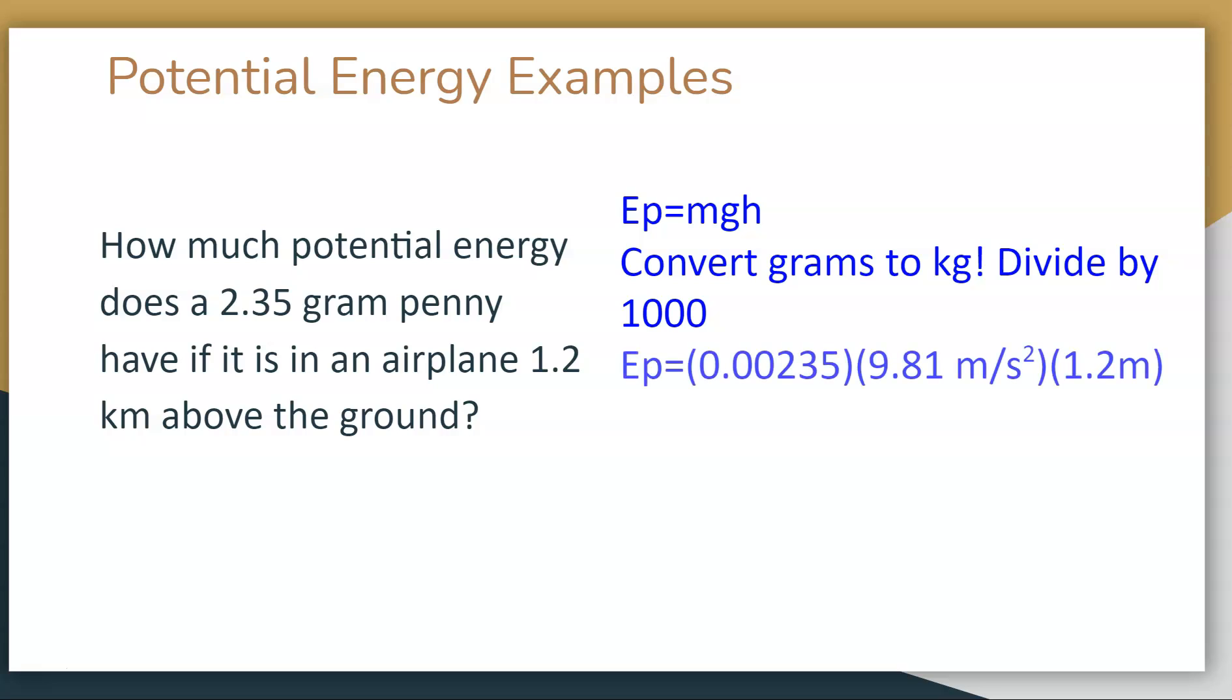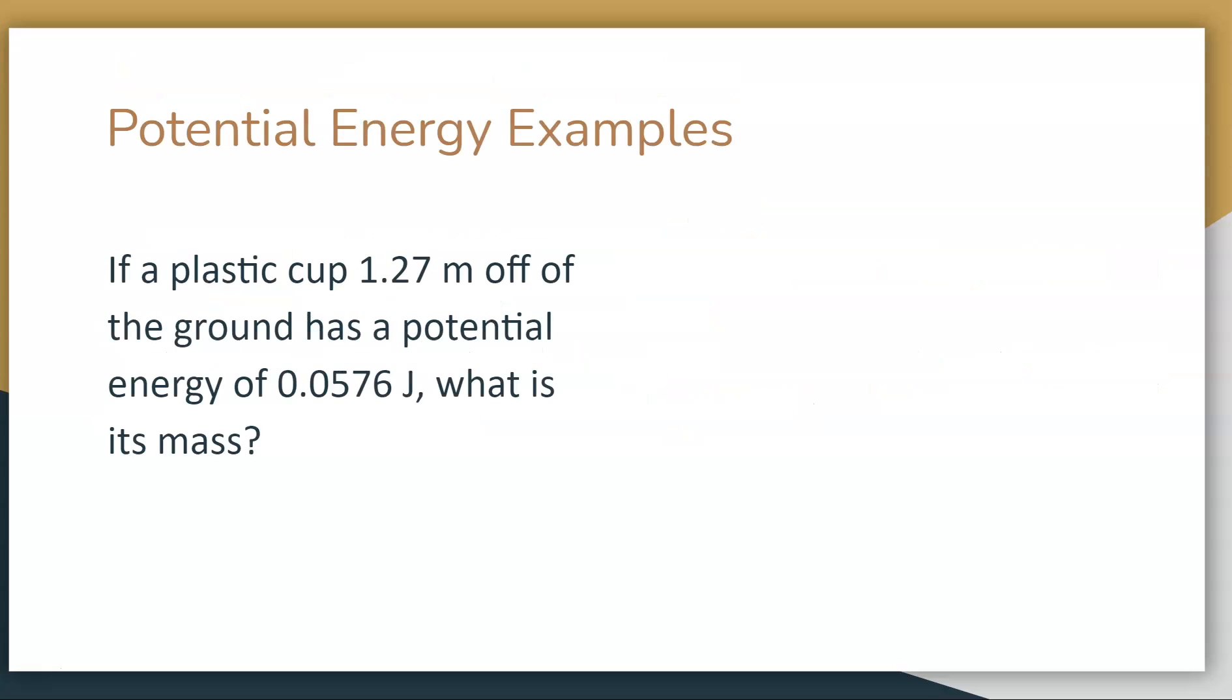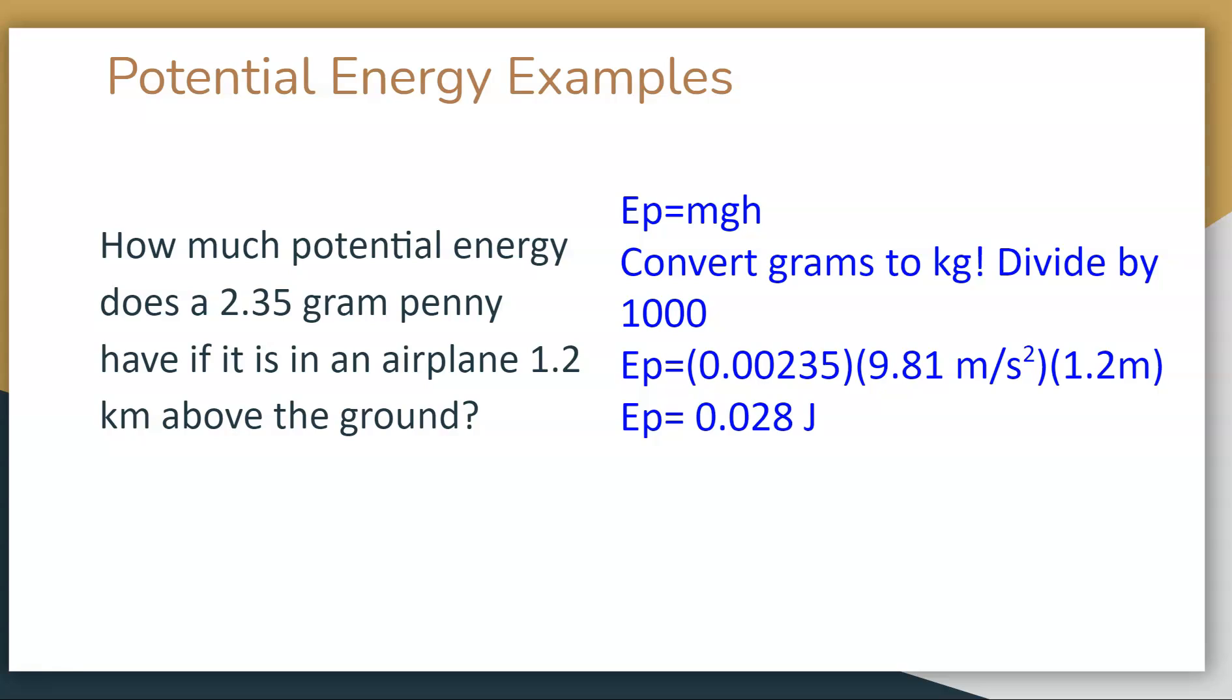Our constant is 9.81 meters per second squared, and our height, which should be in meters... I have kilometers here, but it should be meters. For this purpose, just use 1.2 meters. I made a mistake. This ends up being 0.028 joules with two significant digits. Had I read this question right and not done my work ahead of time, I would have converted kilometers to meters and would have had 1200 meters above ground. Just for now, change your kilometers to meters so we can practice this question.